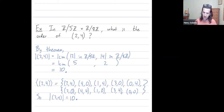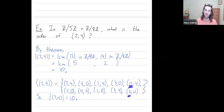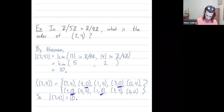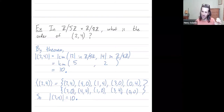Now you should start to see where these least common multiples come in. The order of 2 in Z mod 5Z was five, which means every fifth element we have a zero in the first coordinate. And the order of 4 in Z mod 8Z was two, which means every two terms we have a zero in the second coordinate. The least common multiple comes in because if I have a zero in the first coordinate every five terms and a zero in the second coordinate every two terms, what's the first spot at which they line up? Well, that's the least common multiple of five and two, which is the tenth term.